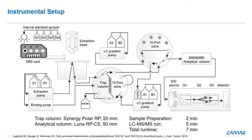Looking at the scheme: the dried blood spot card is placed into an extraction cell and we pump extraction solvent through the dried blood spot onto a trapping column. This trapping column is then back-flushed by an additional pump onto our analytical column, and then goes into the LC-MS — the mass spectrometry instrument — for detection.